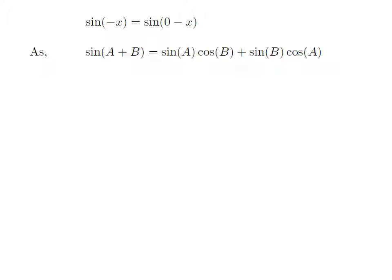As we know, the trigonometry identity sine of A plus B is equal to sine of A into cosine of B plus sine of B into cosine of A. Let us apply the above identity for sine of minus x. Here, A is 0 and B is x.